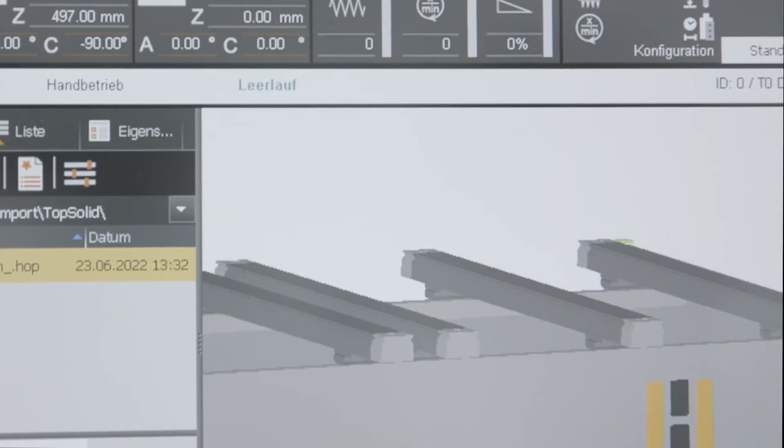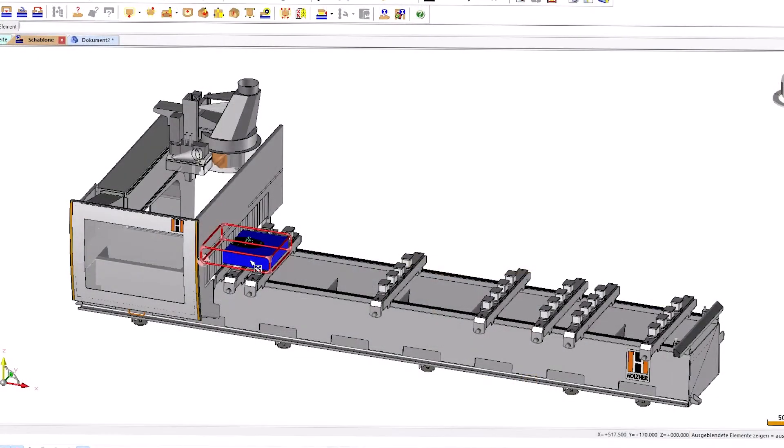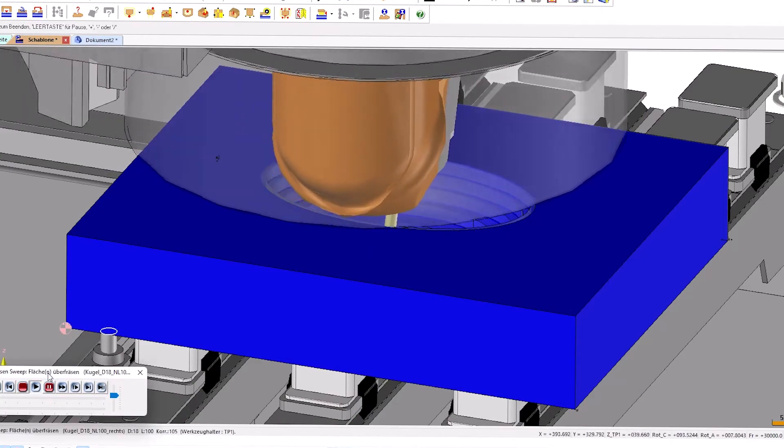Even complex 5-axis machining can be easily implemented with the HALTSER 3D Master software and by linking other 3-dimensional CAD-CAM programs.